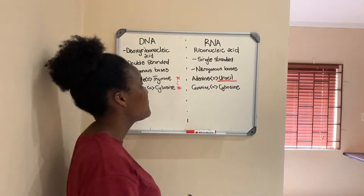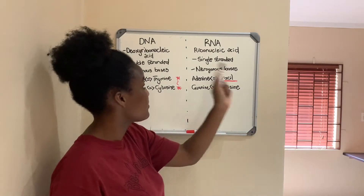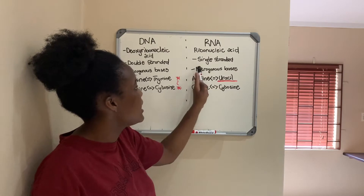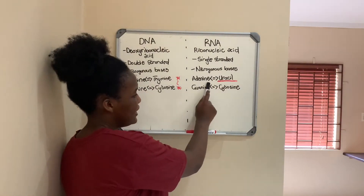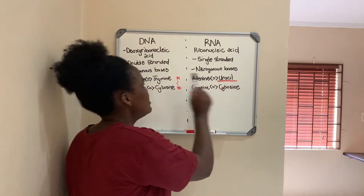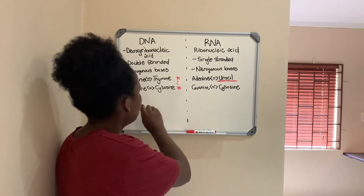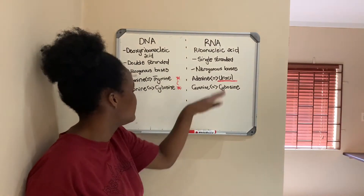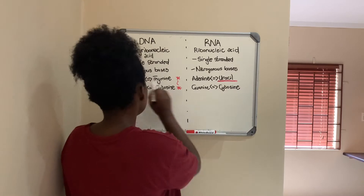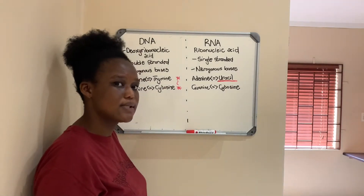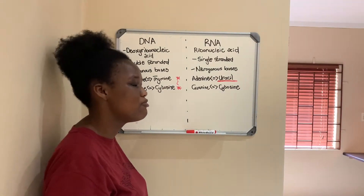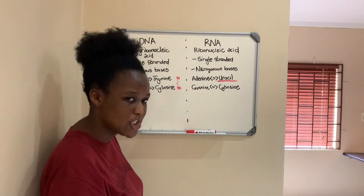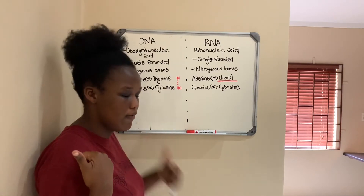Then RNA — ribonucleic acid. It's single-stranded, whereas DNA is double-stranded. The nitrogenous bases are adenine, and then instead of thymine it has uracil, and then guanine and cytosine. I'd put most focus on these four bases because a lot of what will be examined is basically your knowledge of these four bases and how they operate.